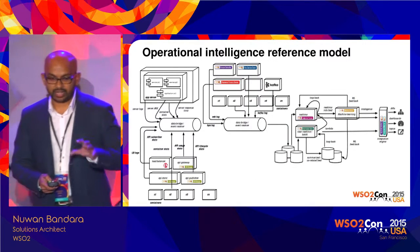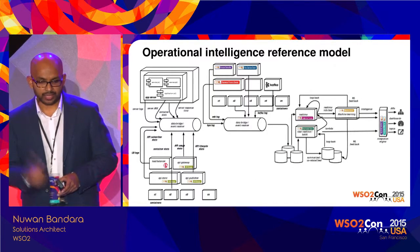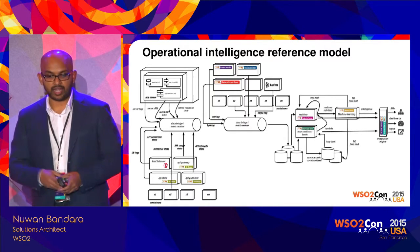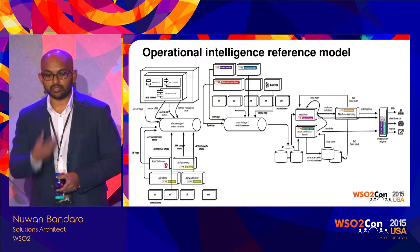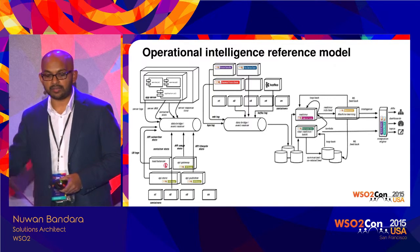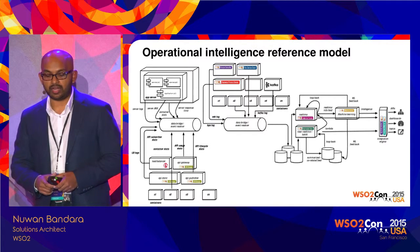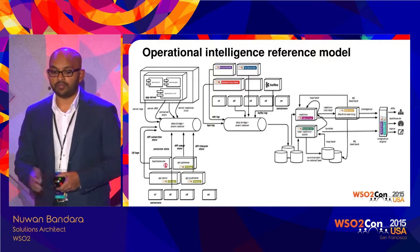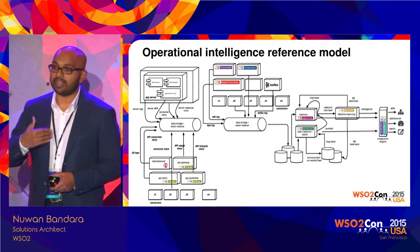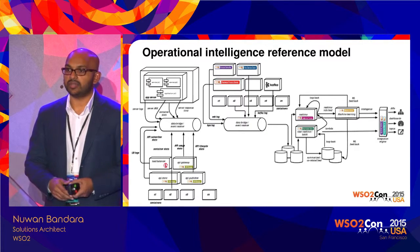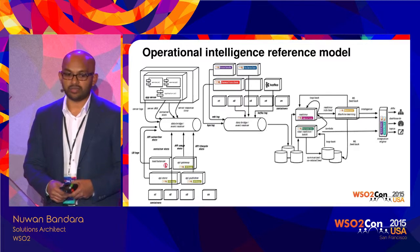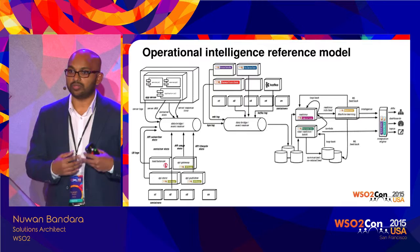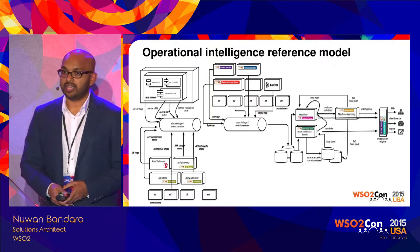Putting that all together, this is the reference model I came up with — where you have all the layers, all that information goes into a queue, you do the decision making, and ultimately it can create APIs, dashboards, or even publish events to a topic so you get notifications: an SMS or alert saying 'this system is down,' 'this message is stuck at the ESB,' 'the ESB is down — take some action.'